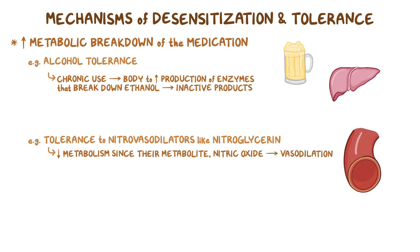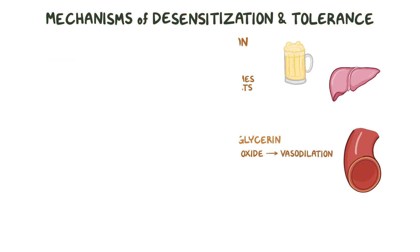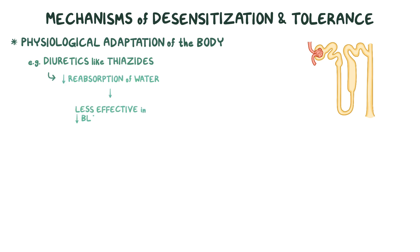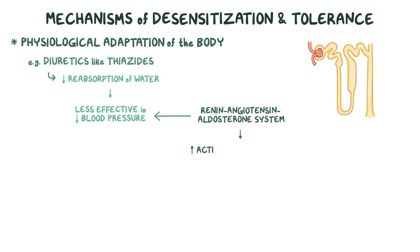Lastly, the effects of a medication may be limited because of a physiological adaptation of the body. For example, diuretics like thiazides, which decrease reabsorption of water, could gradually become less effective in lowering blood pressure, as the renin-angiotensin-aldosterone system increases its activity to maintain blood pressure at high levels.